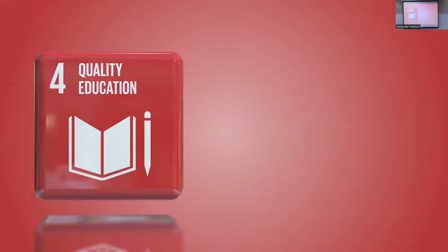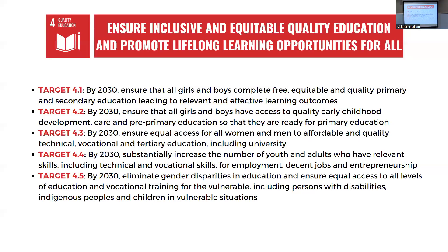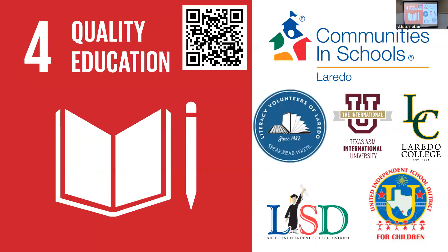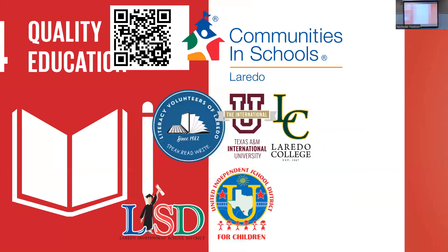SDG Number Four is Quality Education. SDG Four aims to ensure inclusive and equitable quality education and promote lifelong learning opportunities for all. Target 4.1 aims by 2030 to ensure that all girls and boys complete free, equitable, and quality primary and secondary education leading to relevant and effective learning outcomes. Local organizations include Communities in Schools here in Laredo, Literacy Volunteers of Laredo, our university and colleges, and our school districts — all working towards that goal.